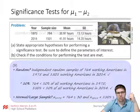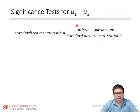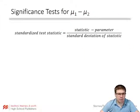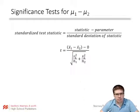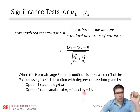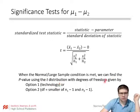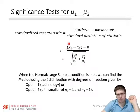To actually do the significance test, we follow the same format: the standardized test statistic t equals (statistic minus parameter) divided by the standard deviation of the statistic. Our statistic is x-bar1 minus x-bar2, our parameter is mu1 minus mu2, but we assume that's zero since that's the null hypothesis. That denominator is the standard error of our statistic, and we use sample standard deviations s instead. When the normal/large sample condition is met, we find the p-value using the t-distribution with degrees of freedom given by technology or the smaller of (n1 minus 1) and (n2 minus 1).